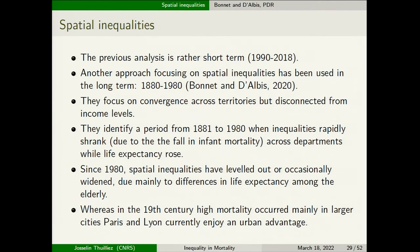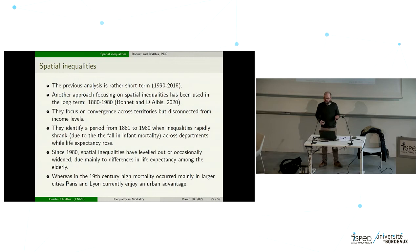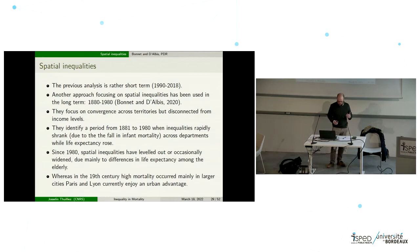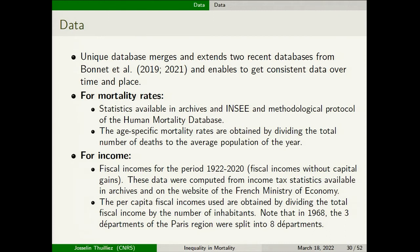Moving now to the historical analysis — we do the same exercise but over a very long time period. Previous approaches by my colleagues Bonnet and Dalby identified a period from 1881 to 1980 when inequalities rapidly shrunk across departments, but since 1980 spatial inequality seems to increase in France. There also seems to be a kind of urban advantage during the 20th century, whereas there was an urban disadvantage before. What we do is use a unique database that merges and extends this earlier work, enabling consistent data over one century.